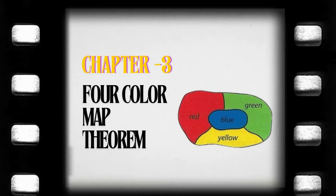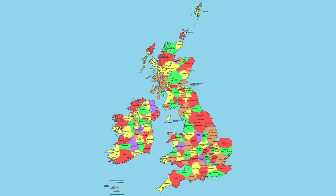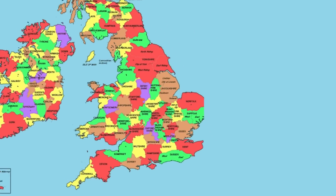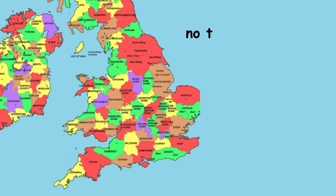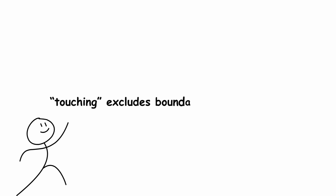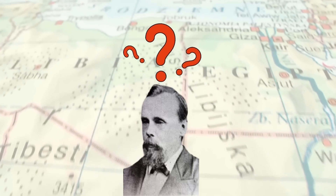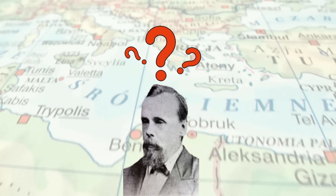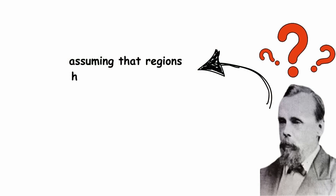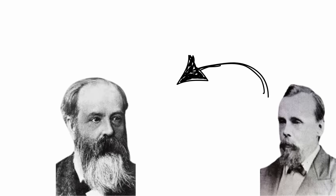Four-Color Map Theorem. On October 23rd, 1852, British mathematician Francis Guthrie was coloring a map of the counties of England. He noticed that he only needed four colors so that no touching counties were the same color — where touching excludes boundaries of zero width. Guthrie soon wondered whether any map could be constructed requiring five or more colors, assuming that regions had to be contiguous, or all in one piece.